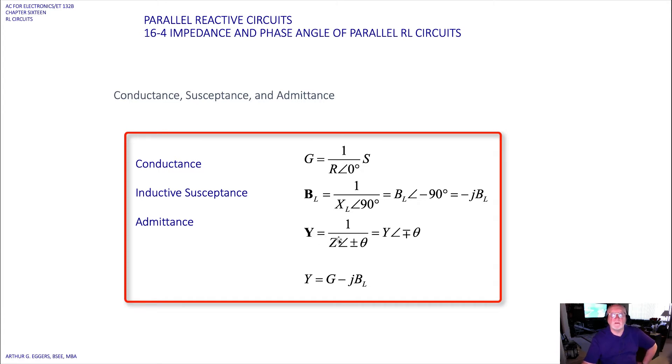The term is one over the impedance, Y equals Y at an angle of minus or plus, because again we move the angle into the numerator theta. So phasorally or vectorally combining them, we have the admittance which is the total inverse impedance.